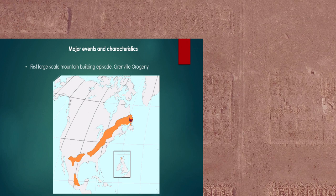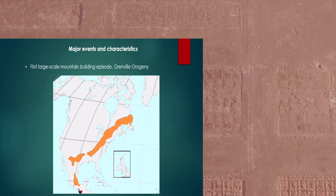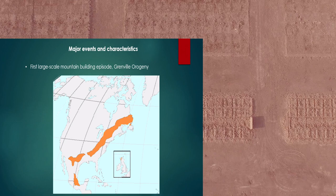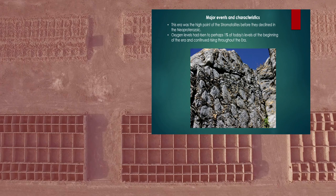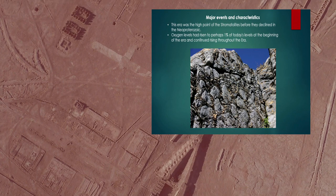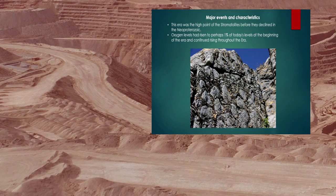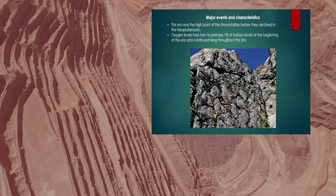This era was the high point of the stromatolites before they declined in the Neoproterozoic Era, and oxygen levels had risen to perhaps one percent of today's levels at the beginning of this era and continued to rise throughout the era. You can see a picture of a wall of stromatolites here at the bottom of the PowerPoint, very interesting looking rock with various wave formations.